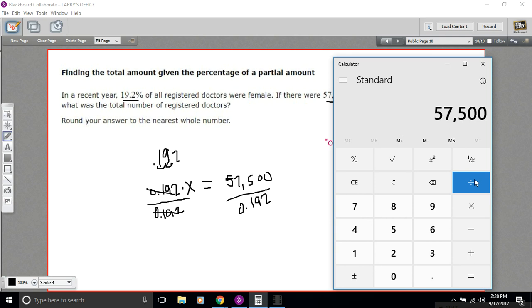I've got 57,500. We're going to divide by 0.192. And we get 299,479 and 0.16 repeating.